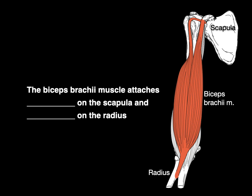How about this one? The biceps brachii muscle attaches blank on the scapula and blank on the radius. Well, the biceps is proximally attached on the scapula and distally attached on the radius.